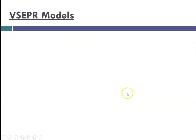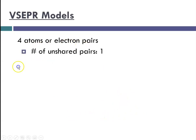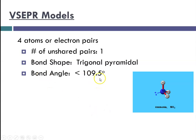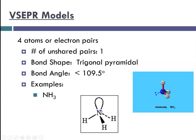Continuing with VSEPR models: if you have four atoms or electron pairs and the number of unshared pairs is one, the bond shape would be trigonal pyramidal. The example we use is ammonia, where nitrogen is bonded to three hydrogens, but nitrogen also has this unshared lone pair of electrons that changes the geometry and repels the hydrogens. The resulting bond angle is less than 109.5 degrees. Other examples include phosphorus trifluoride and monochloroamine.